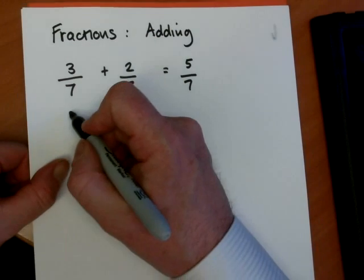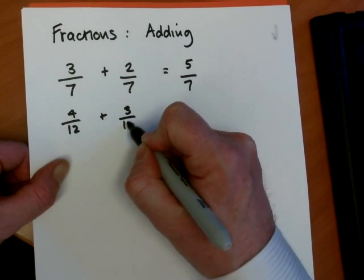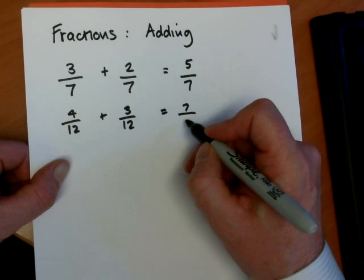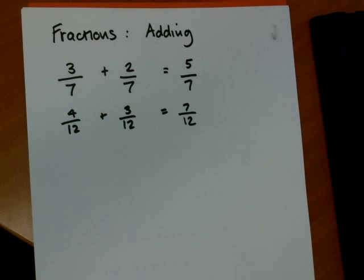So that's nice and easy. If the next question was 4 twelfths plus 3 twelfths, then you should see straight away it's going to take, really all it requires you to do is add the top number and leave the bottom one the same. So nice and straightforward, and that's probably around sort of E grade.